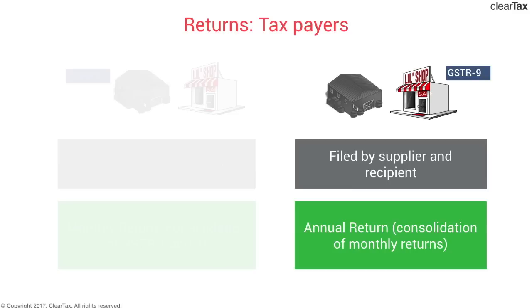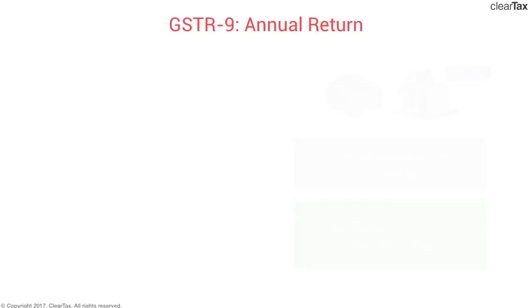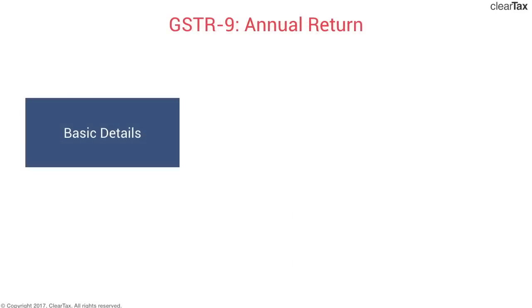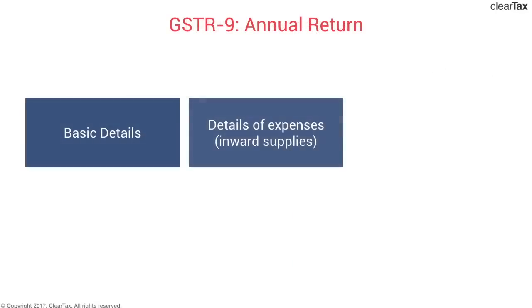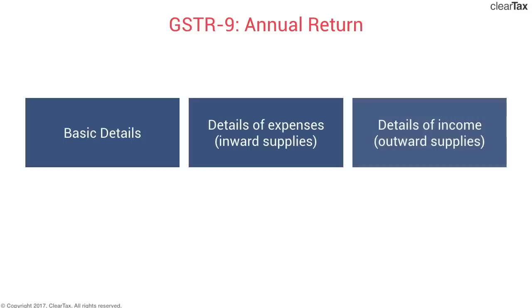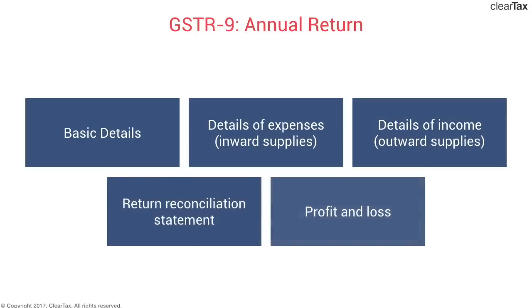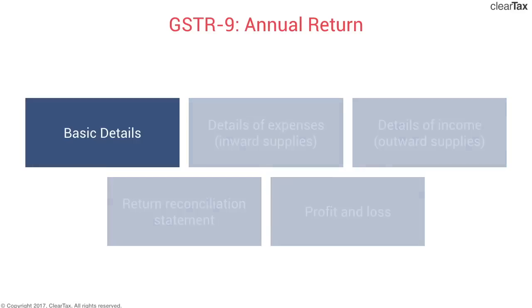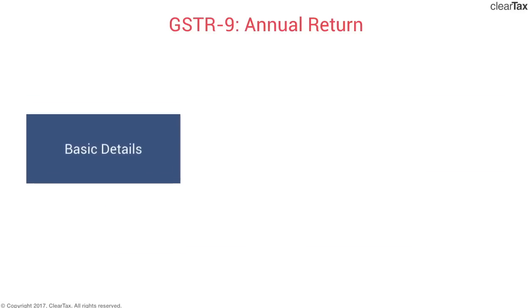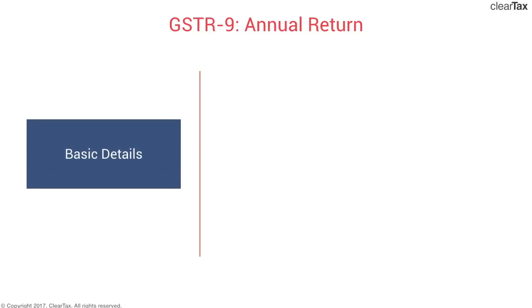The details required can be divided into five broad categories: basic details, details of expenses which are inward supplies, details of income which are outward supplies, the return reconciliation statement, and the profit and loss.